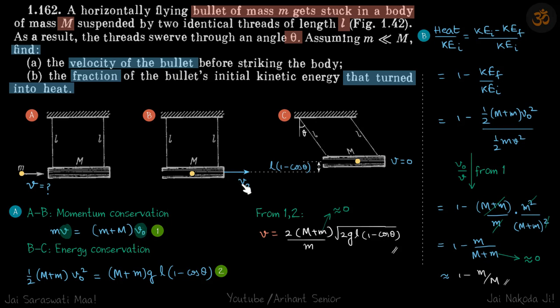Now energy conservation from B to C. Initially, energy is 1/2(M+m)V_not². And finally it is at rest here, so only potential energy.